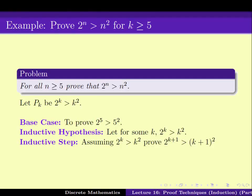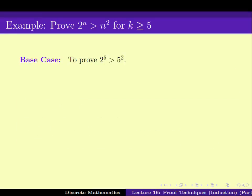To start with the base case: this is a standard easy thing to verify. 2^5 is 32, which is greater than 25, which equals 5². Hence the base case is true.